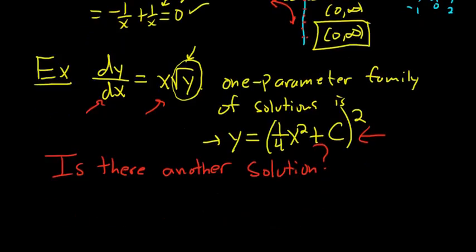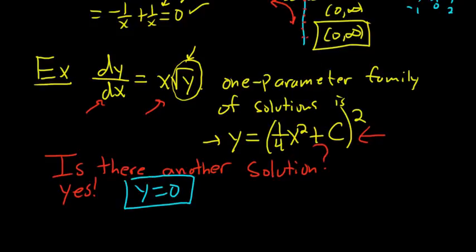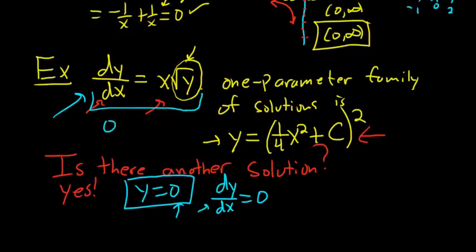By observation, the answer is yes — y equals 0 is also a solution. You can check: if y equals 0, then dy/dx is also 0 (derivative of a constant). Plugging back in: 0 equals x times the square root of 0, so 0 equals 0. That checks out, so y equals 0 is indeed a solution.